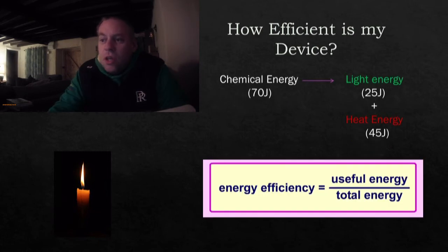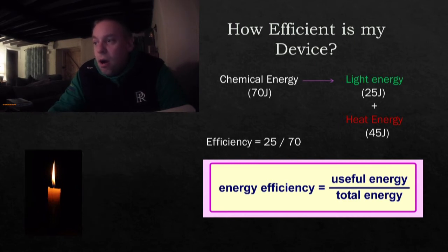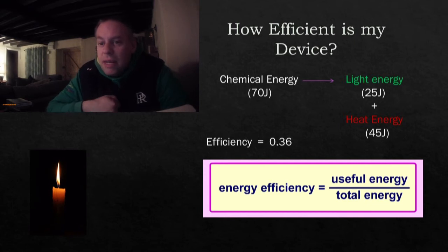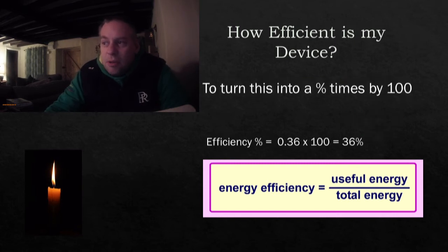So we can use those numbers to work out the efficiency of this device and we do that using this equation: efficiency equals the useful energy divided by the total energy, which should be the input energy. So in this case my useful energy was 25 joules and my total energy was 70. So if I did this as a calculation I get 0.36. Now you should never get anything above 1 because the total energy should always be greater than the energy that's split. If I want to turn that to percentage, all I need to do to turn that decimal to percentage is times it by 100. And so you can see the candle in this example is 36% efficient.